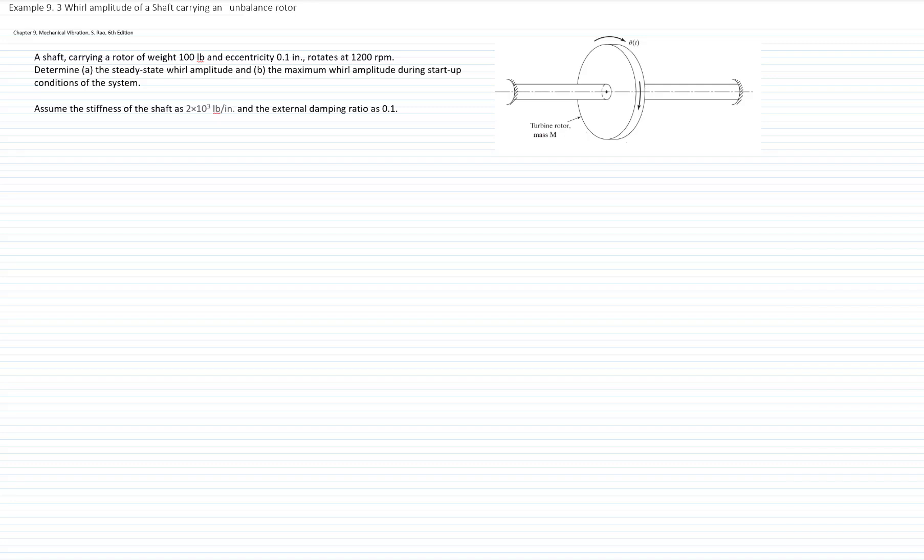This is Example 9.3. We will analyze the weld amplitude of a shaft carrying an unbalanced rotor. This is part of Chapter 9 of a mechanical vibration textbook from Rao 6th edition.